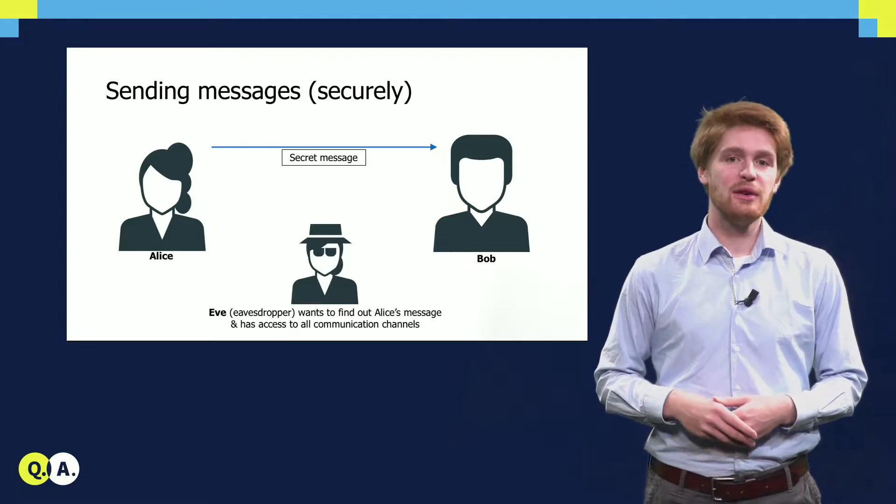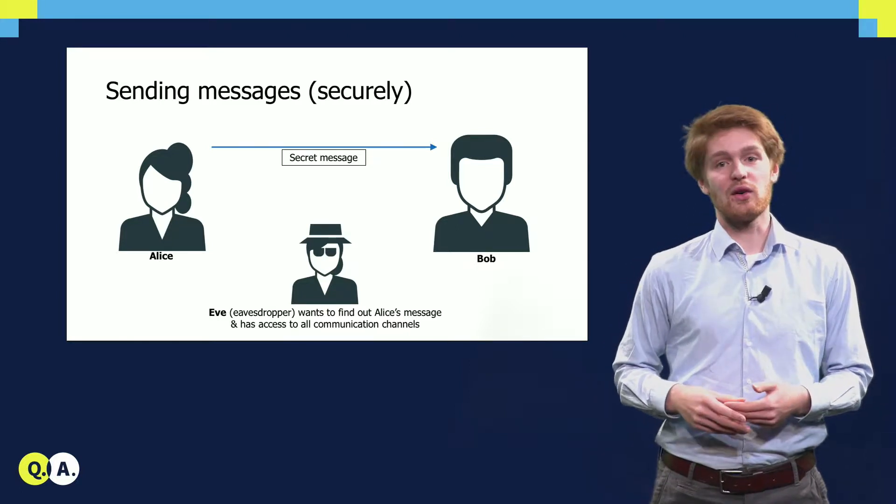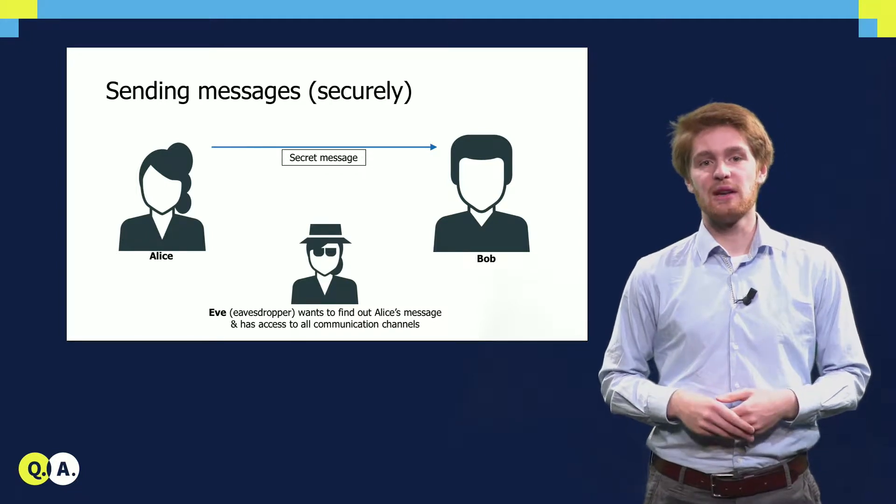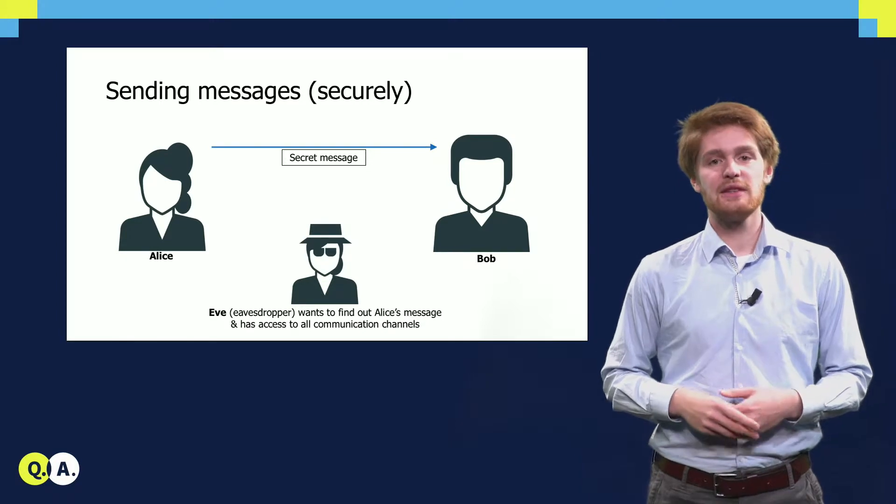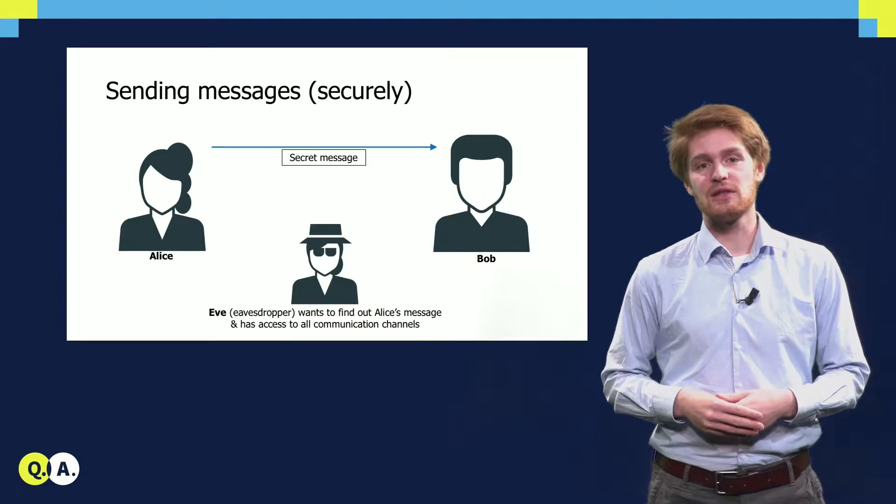For example, if Alice and Bob use computers with a cable in between, then Eve could be tapping the cable. Or, if Alice and Bob use regular paper mail to communicate, Eve could be the postman, who can secretly open and close the letters. The main question here is, how can Alice and Bob communicate such that Eve cannot read their messages?